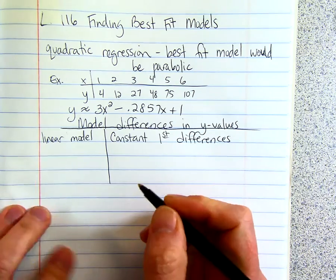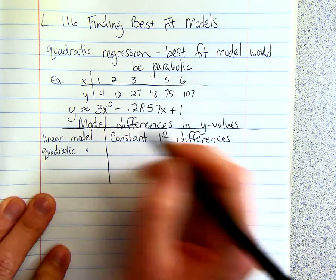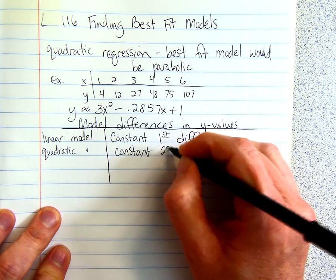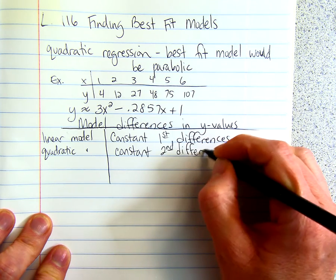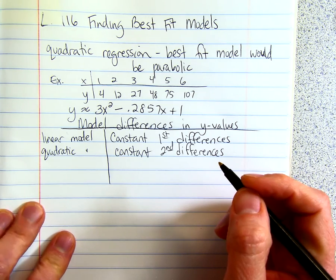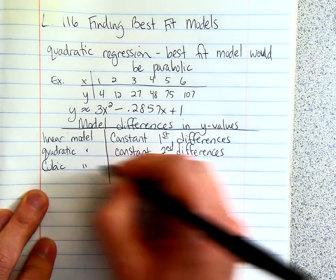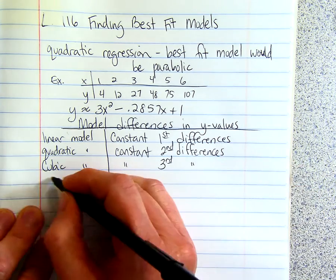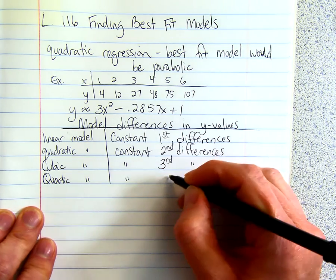And then if you're doing a quadratic model, you're going to have a constant second differences. Then a cubic model has a constant third differences. And a quartic has a constant fourth.